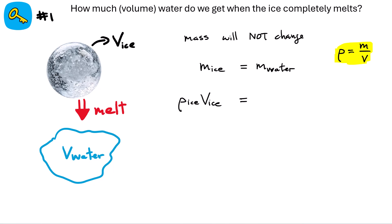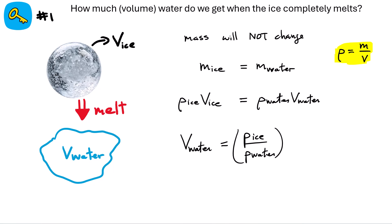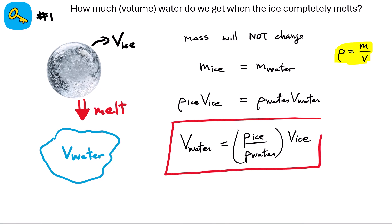For the water side, the mass equals the density of water multiplied by the volume of water you get once the ice melts. Dividing through by the density of water gives our first key equation: the volume of water equals the ratio of density of ice over density of water, multiplied by the initial volume of ice.